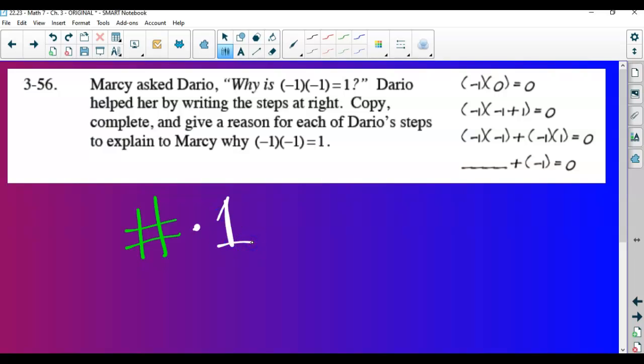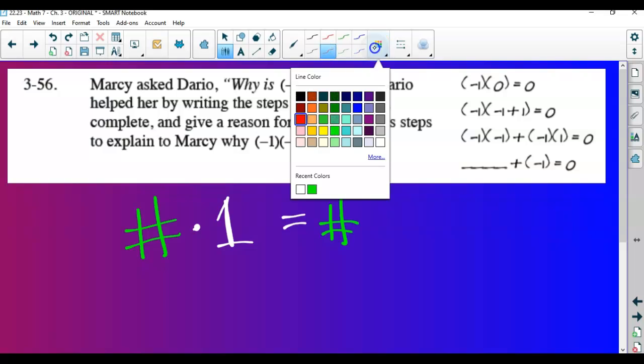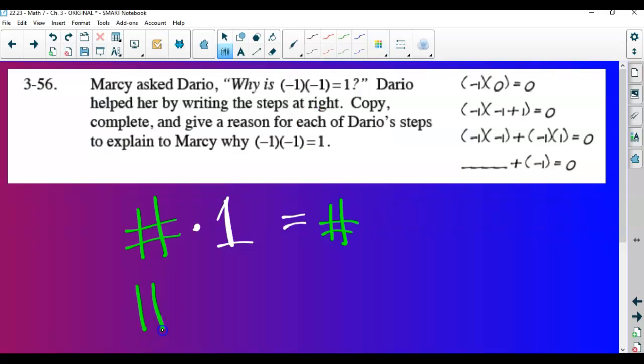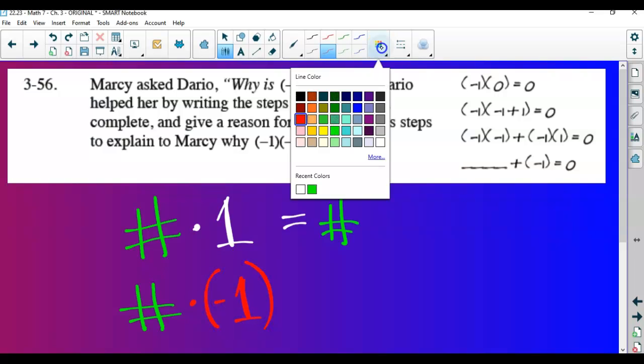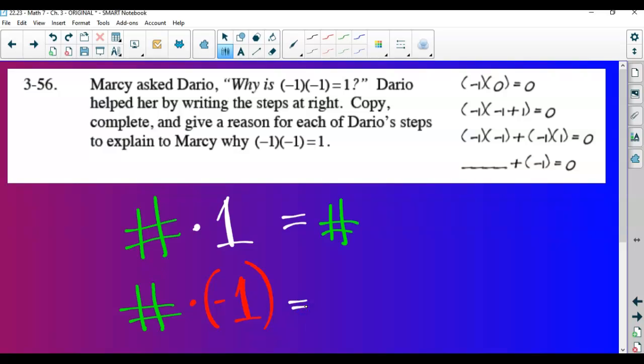All right, if a number gets multiplied by one, what happens? It's a no. Yeah, nothing, right? Nothing, it's itself. It's literally itself. So wait, what? Now be careful before you answer a number that we don't have. If it now gets multiplied by a negative one, what will the result be?